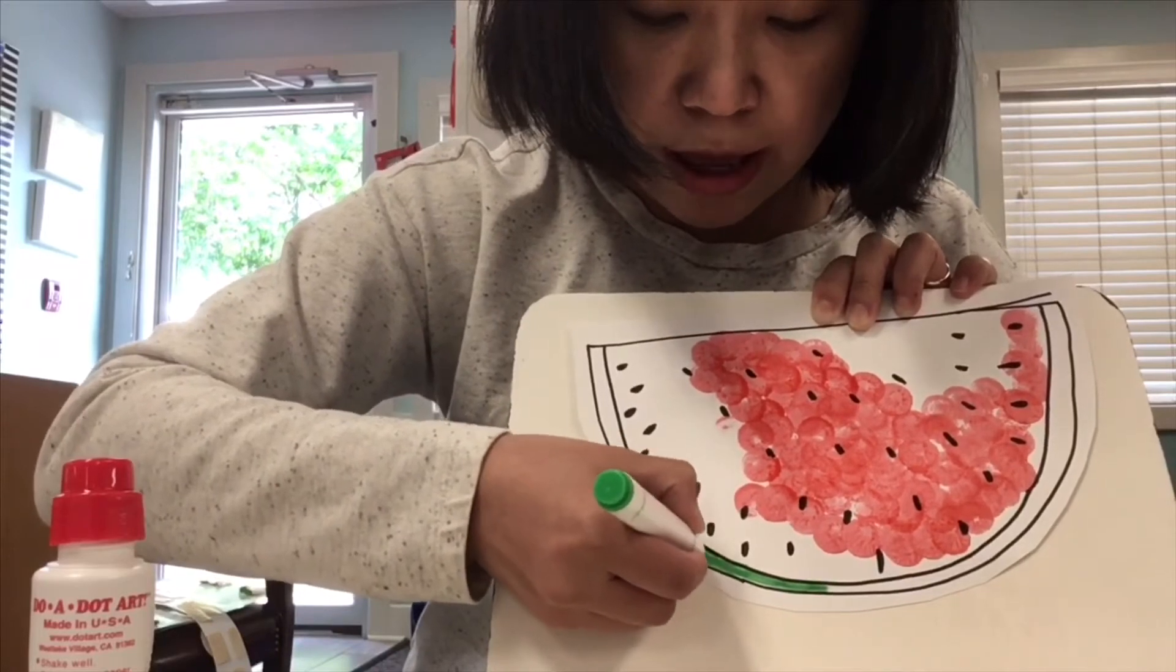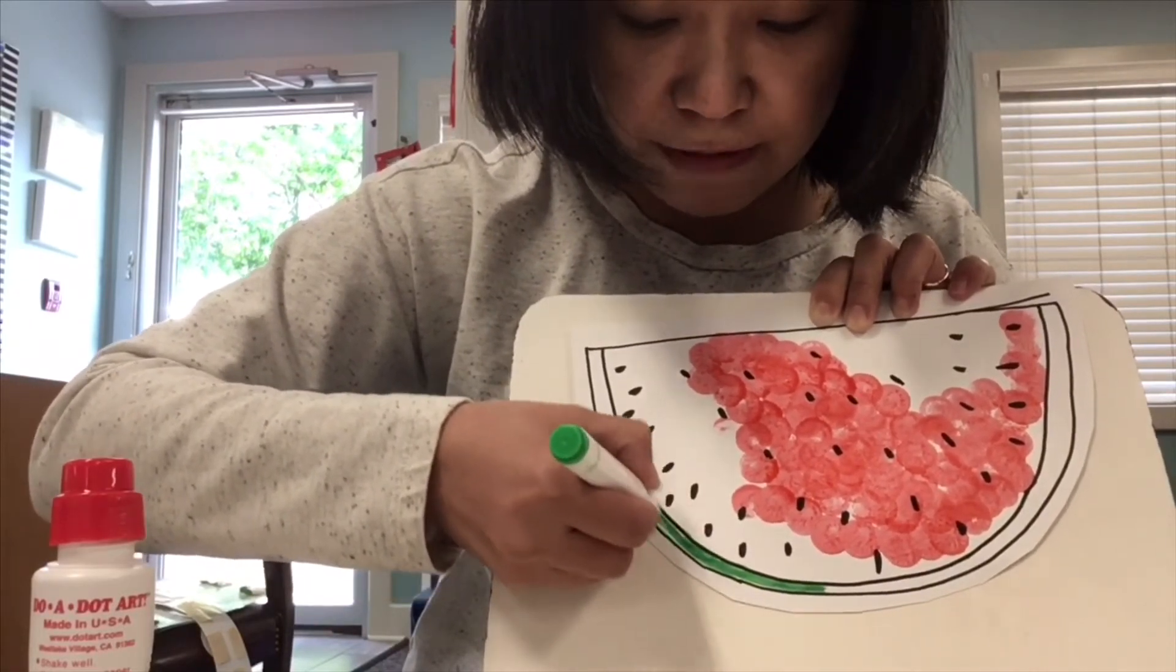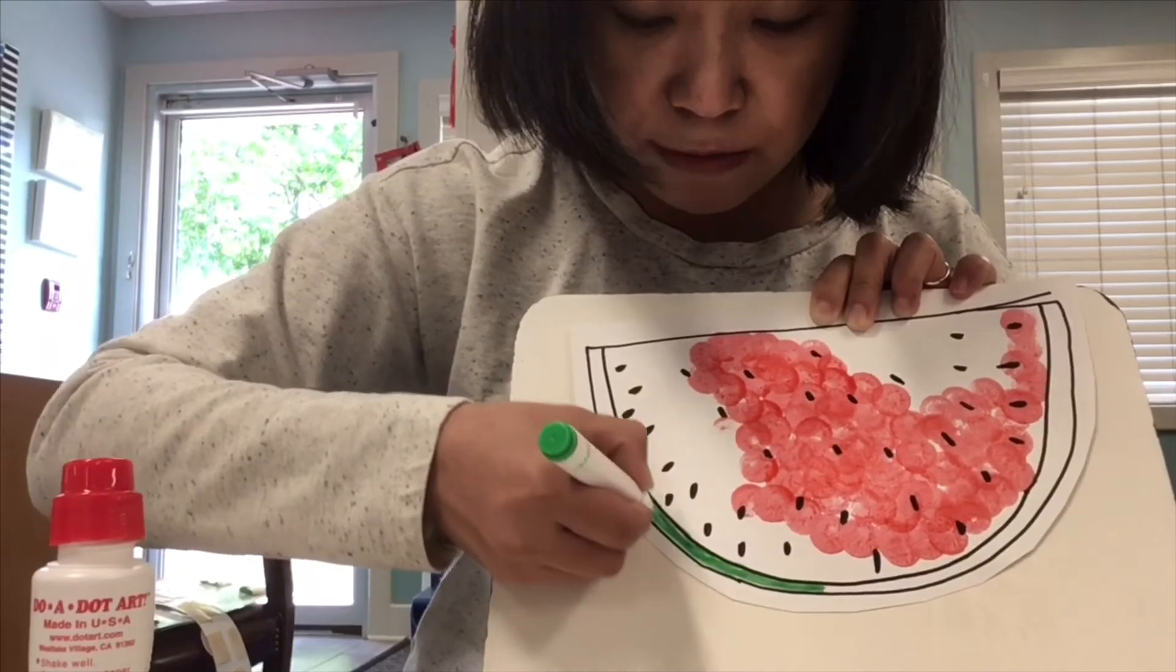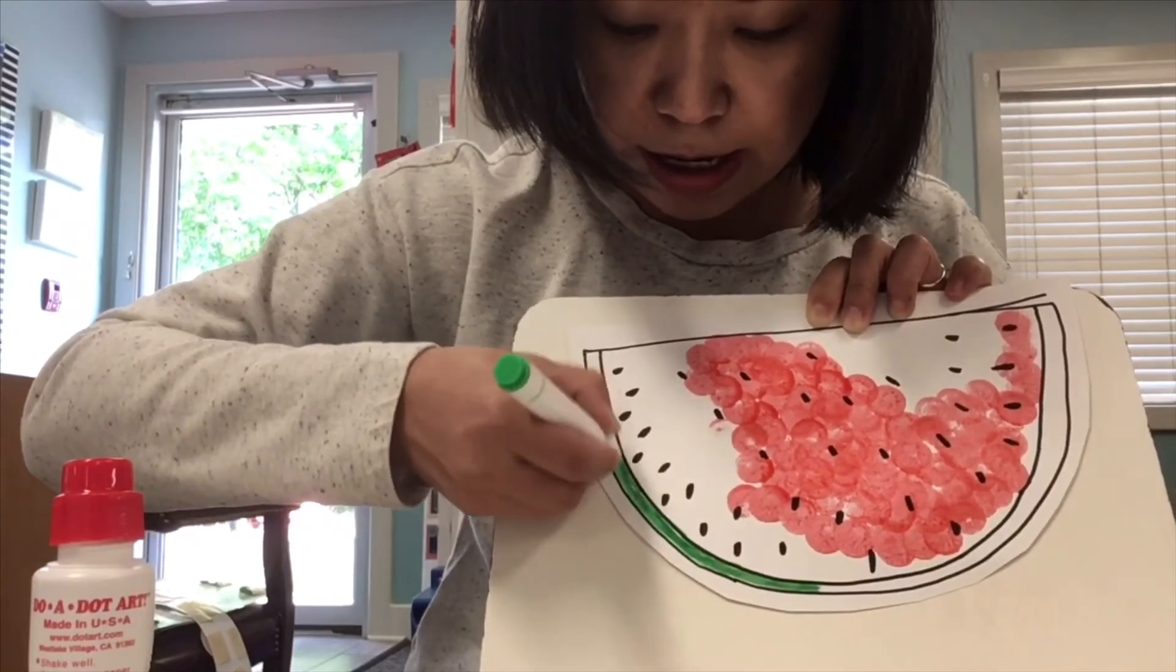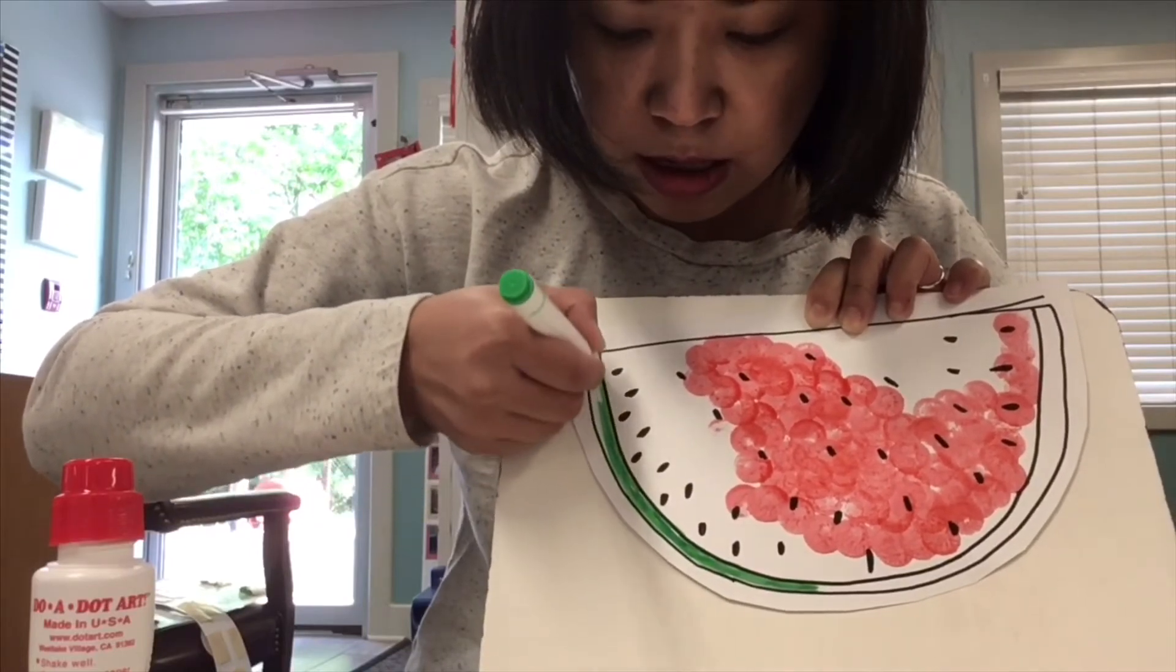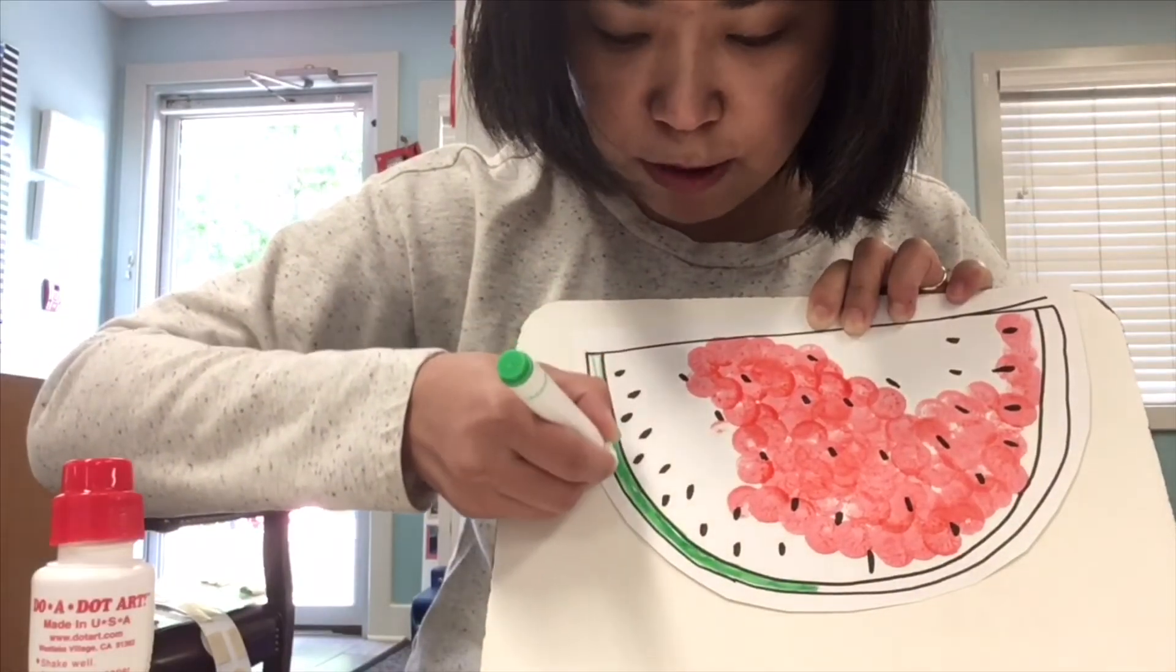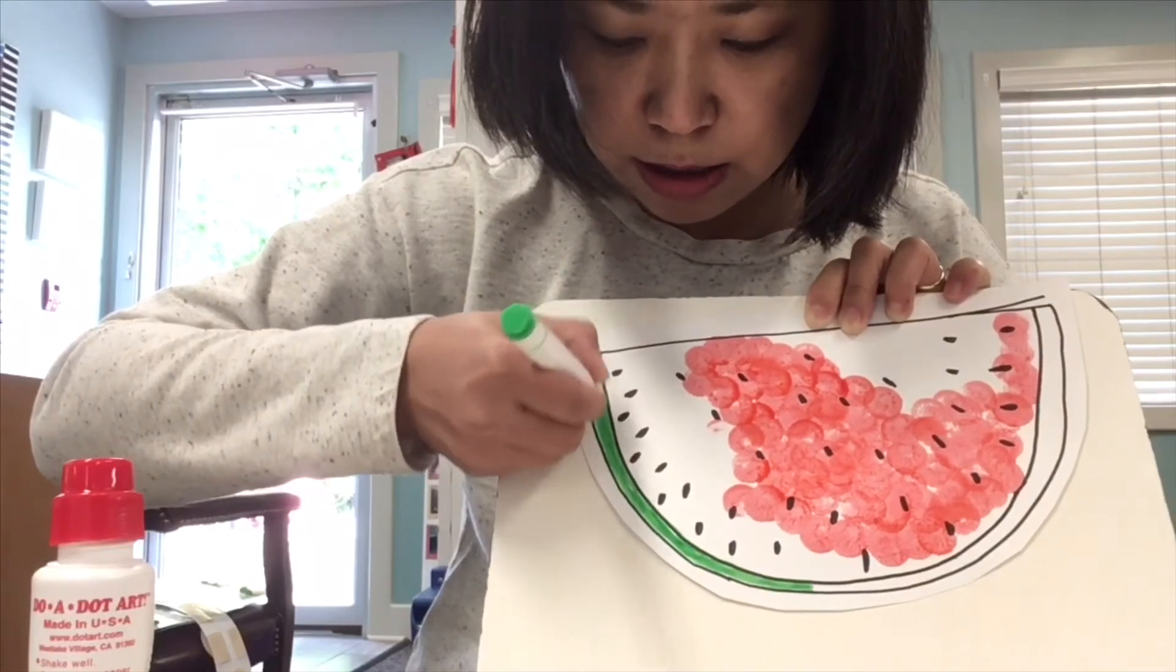If you don't have watermelon at home, if you have other fruit and veggies, also, if you're using markers, make sure you're coloring in the line. No scribble scrabble, okay? Do you guys like to eat watermelon? I love watermelon.